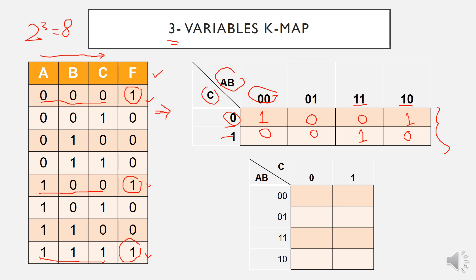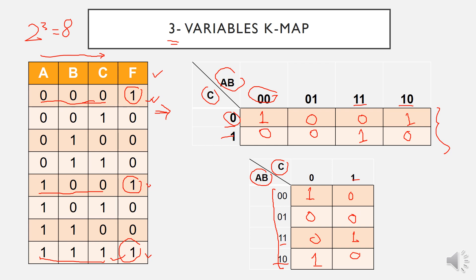The first high output is at A, B, C = 0, 0, 0, so we insert 1 in that cell. The next high output is at A, B = 1, 0 and C = 0, so we insert 1 there. The last high output is at A, B, C = 1, 1, 1, so we insert 1 in that cell. The rest of the cells will be 0. We can also rearrange the K-Map by placing C on top and AB on the side — the same labeling principles still apply, with only one variable differing between adjacent cells.